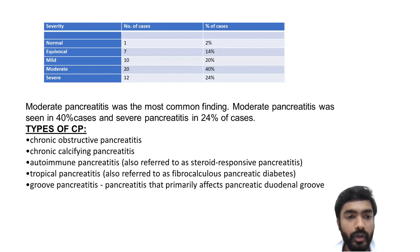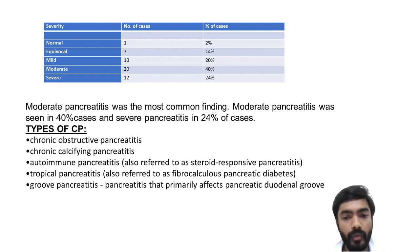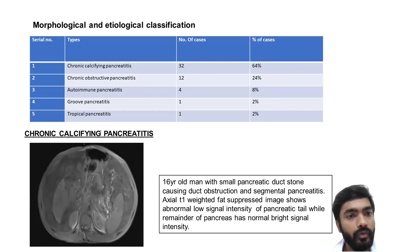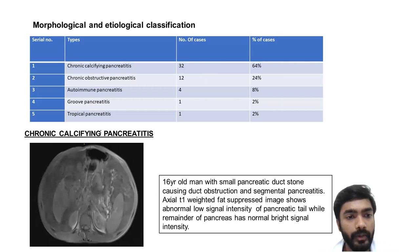Basic types of chronic pancreatitis are: chronic obstructive, chronic calcifying, autoimmune pancreatitis, tropical pancreatitis, and groove pancreatitis. In our case series by morphological and etiological classification: 32 cases of chronic calcifying pancreatitis, 12 chronic obstructive pancreatitis, 4 autoimmune, 1 groove pancreatitis, and 1 tropical pancreatitis.